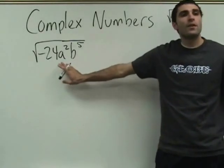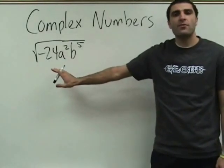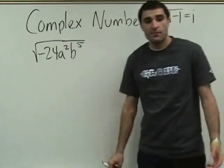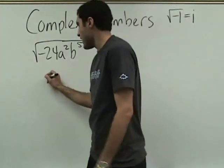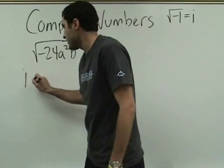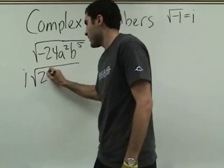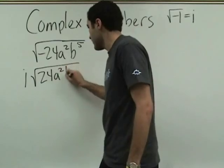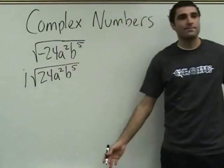Alright, so what did we do last time about the negative? Who can always put i on the outside? We can do that. Here it comes — i. And let's rewrite it since we're in beginning stages. So i is outside.